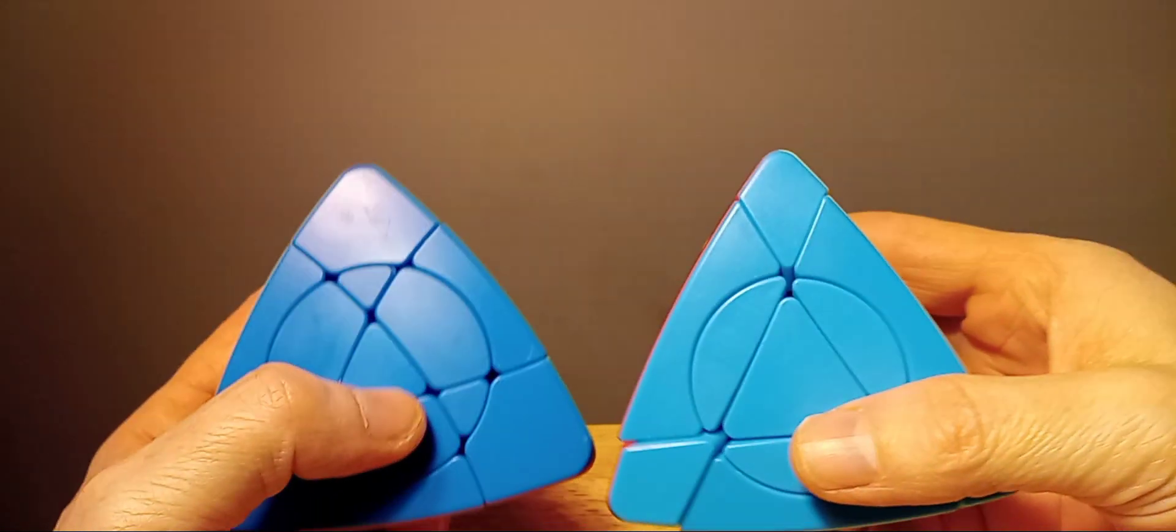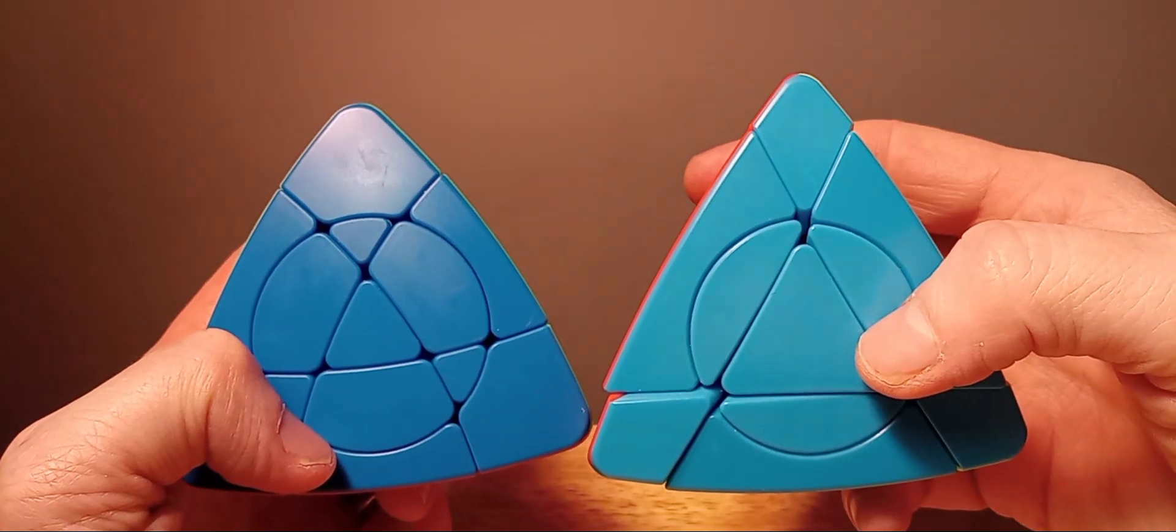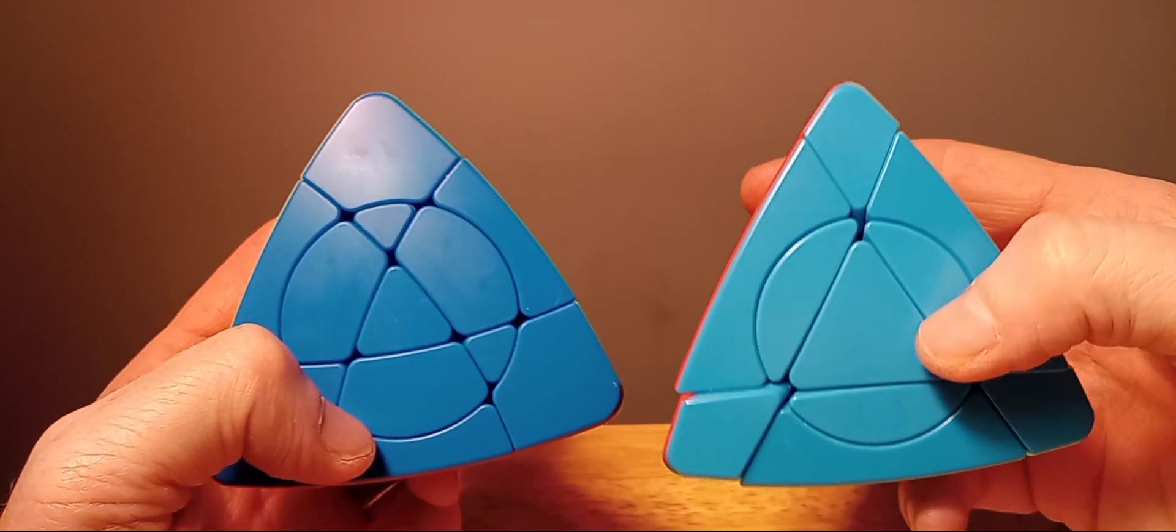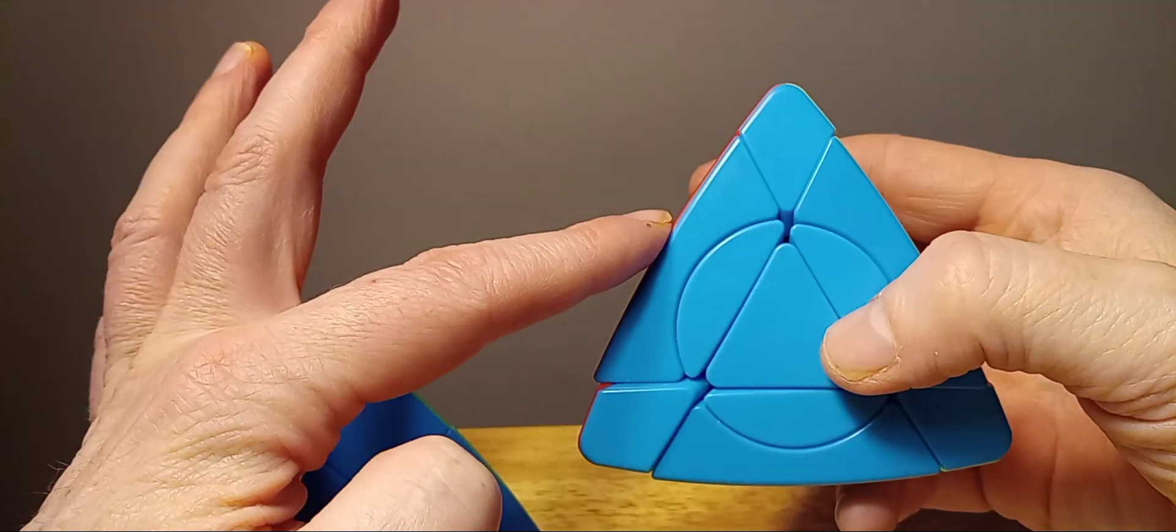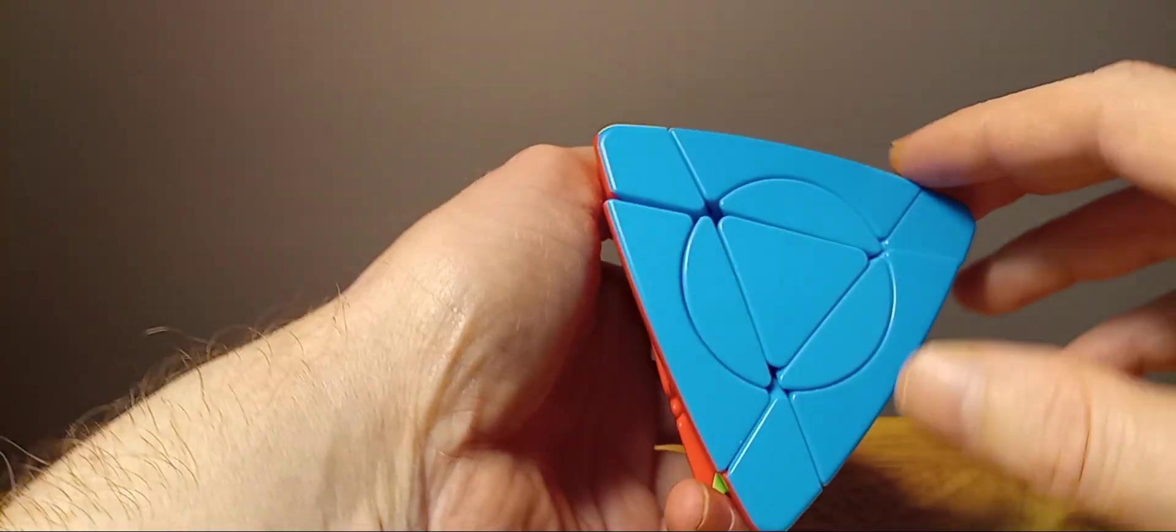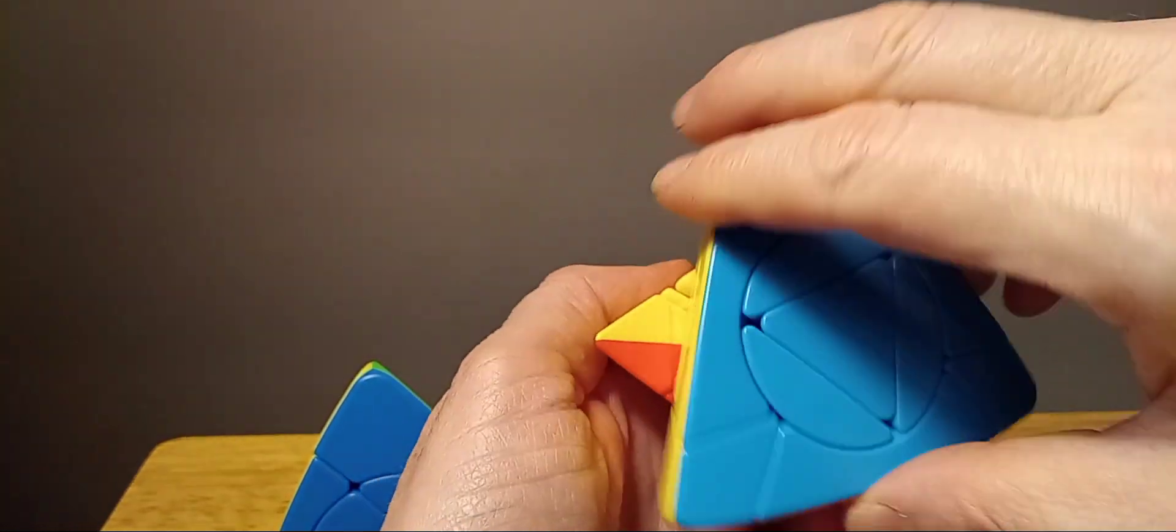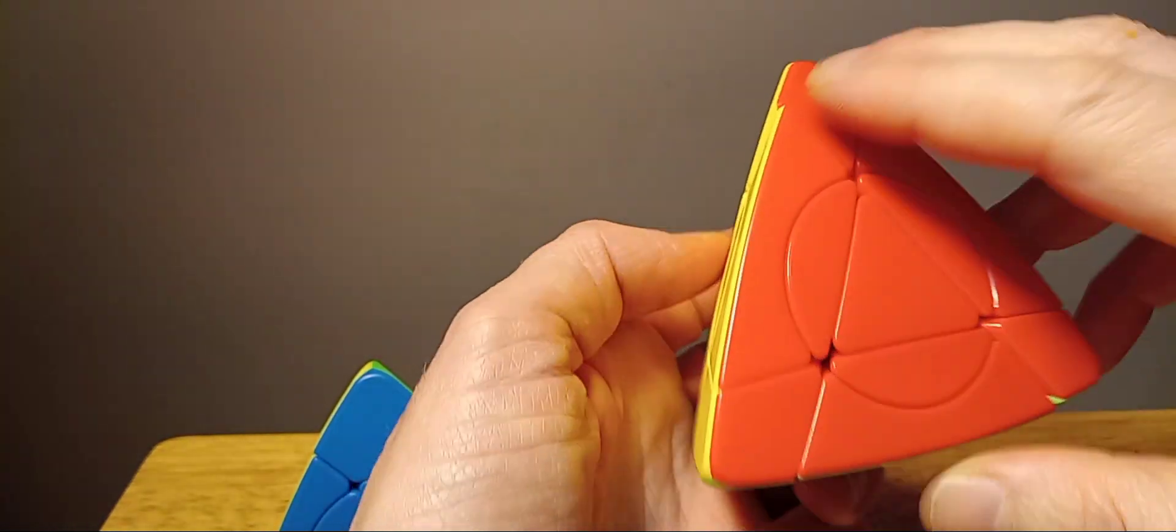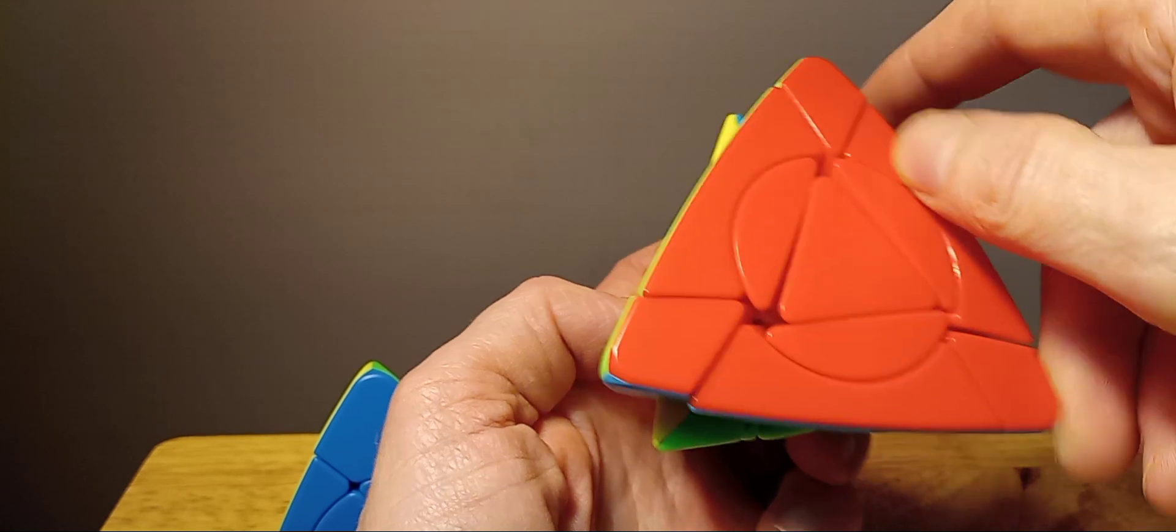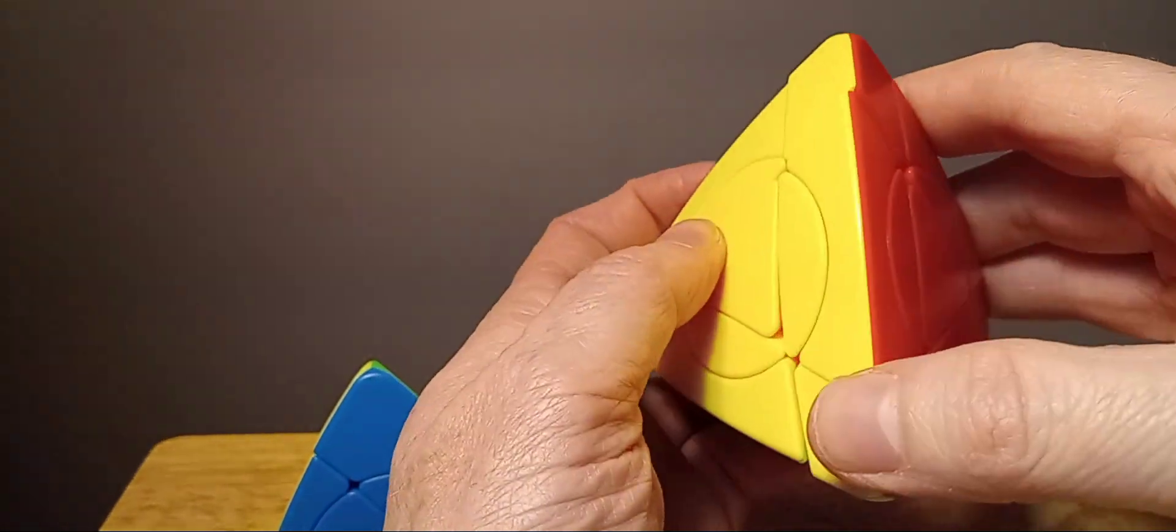I wanted to show you that I have the version 1, this is the Shang Shao Crazy Magic Tower version 1, this one right here. On this one, the difference is it turns like this, every side turns like that.